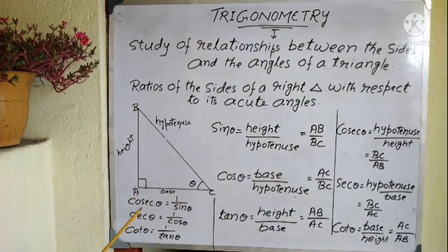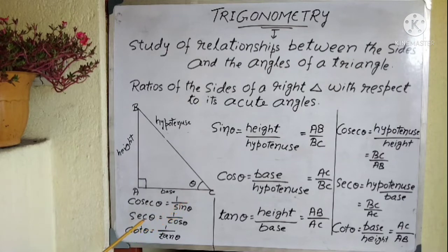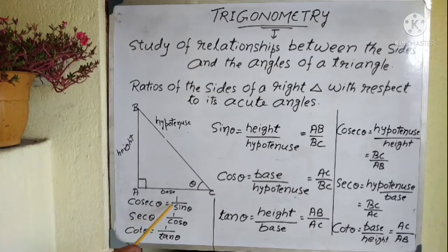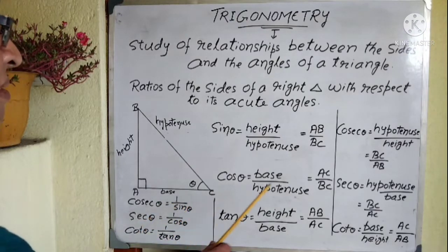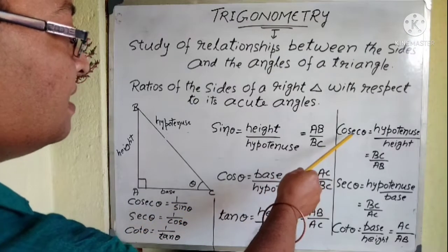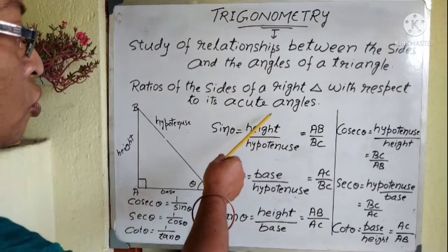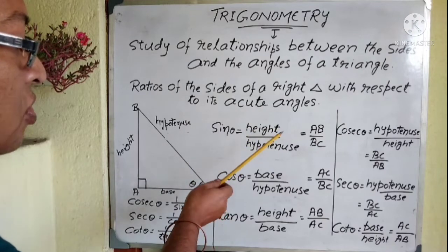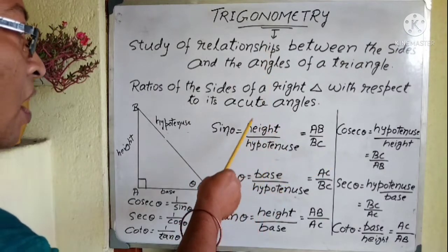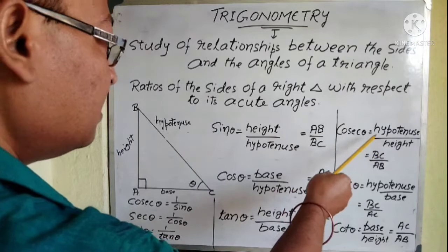Another three things you have to remember: cosec theta is equal to 1 by sin theta, sec theta is equal to 1 by cos theta, and cot theta is equal to 1 by tan theta. These are all reciprocals. Cosec theta is 1 by sin theta — since sin theta is height by hypotenuse, putting 1 over it reverses it to hypotenuse by height, which is cosec theta.